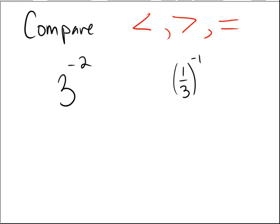Let's evaluate what we have here. We have 3 to the power of negative 2, and 1 third to the power of negative 1. Recall that a negative exponent is a reciprocation — it means to flip things over. 3 squared is just 9, so if you have a negative exponent, instead of writing 9, it actually turns out to be 1 ninth. It gets flipped over, gets reciprocated.